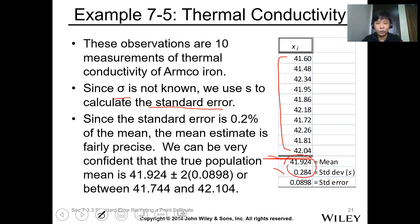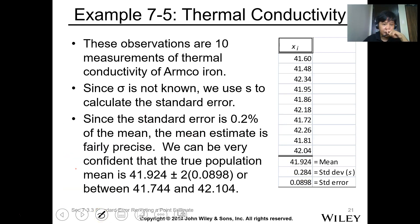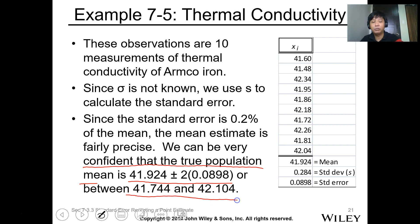If you calculate the standard error, since the standard error is 0.284 — that's the standard deviation — compared to the mean of 41.924, it's just 0.2 percent. That means the mean estimate is fairly precise because the deviation of our data is very low. We can very confidently state that the true population mean is between 41.924 plus or minus twice the standard deviation, giving the range 41.744 to 42.104.